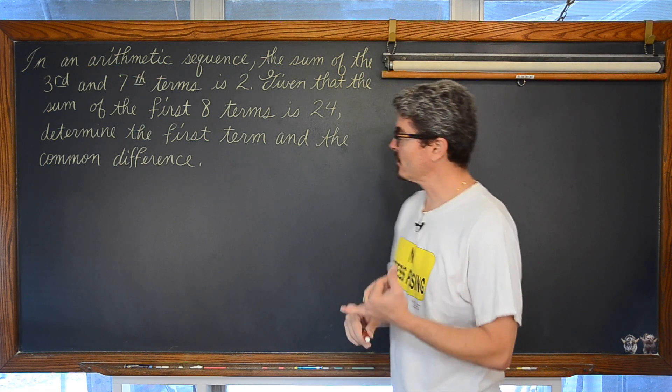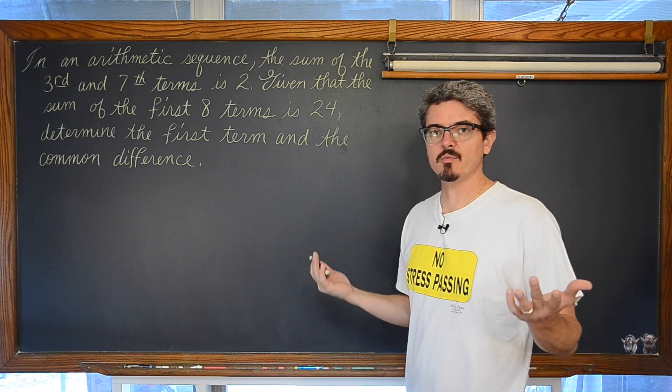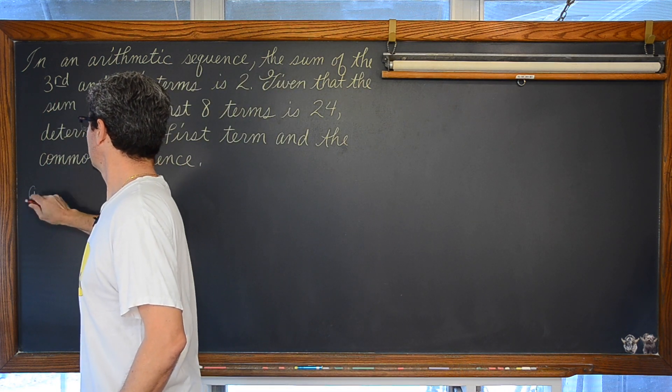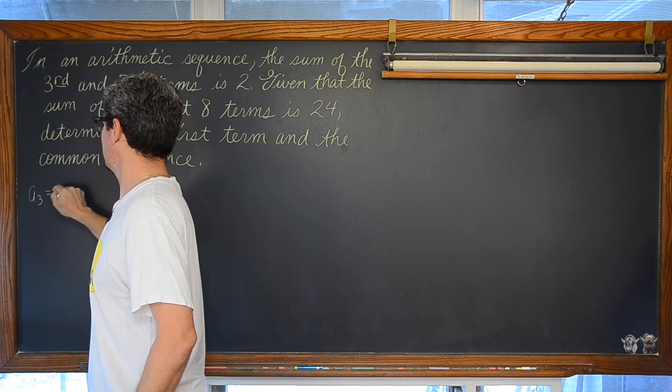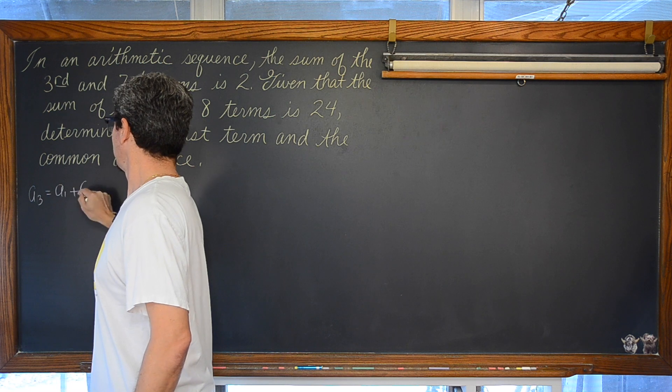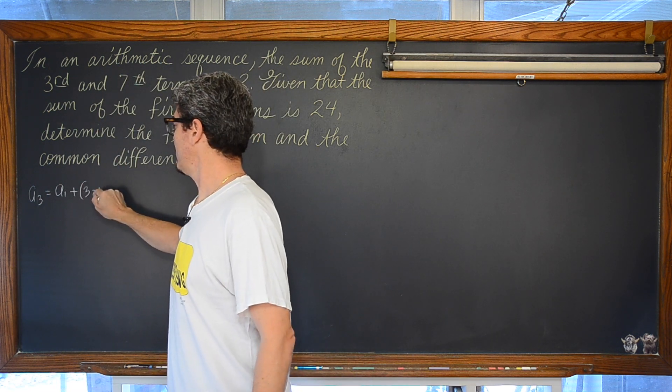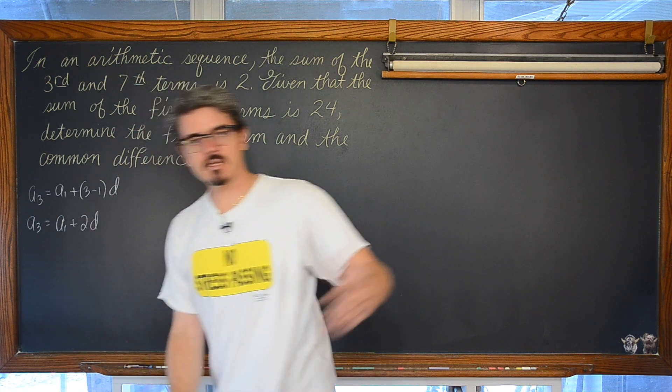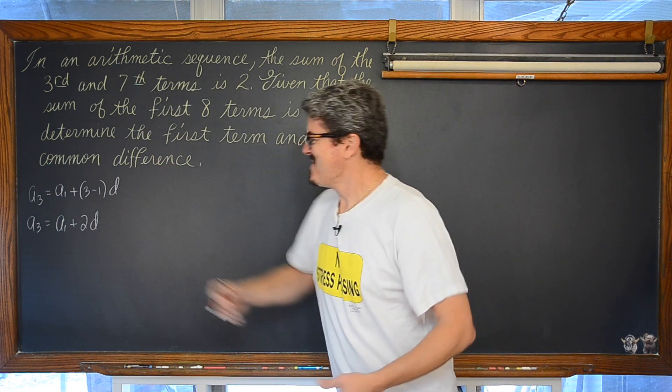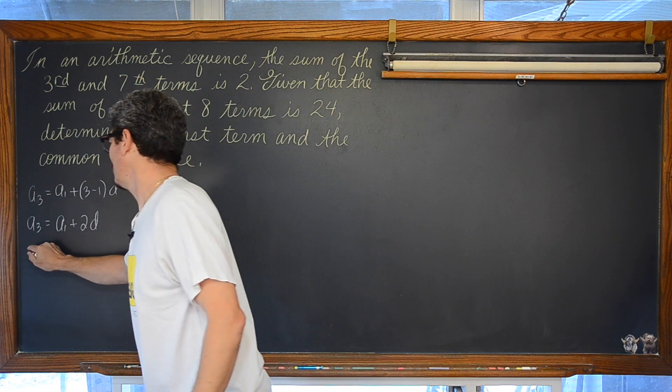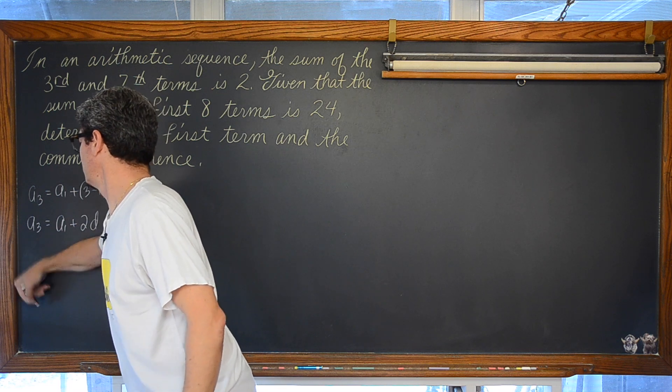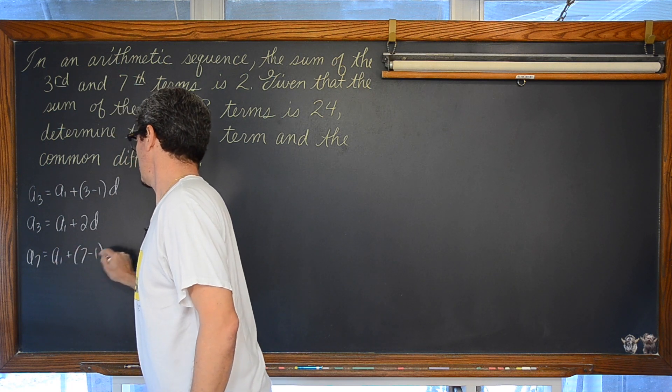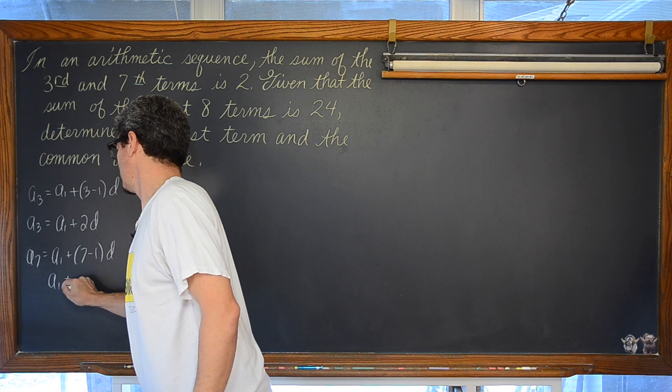Like, the sum of the third and the seventh term is 2. Why don't we just set up a formula for adding those two and set it equal to 2. The third term in the sequence, not the first. The third term in the sequence is going to be equal to the first term plus n, which is going to be 3 for a sub 3. So 3 minus 1 times the common difference. So a sub 3 is equal to a sub 1 plus 2d. We know what a sub 3 is. a sub 7 is going to be a sub 1 plus 7 minus 1 times d, a sub 1 plus 6d.